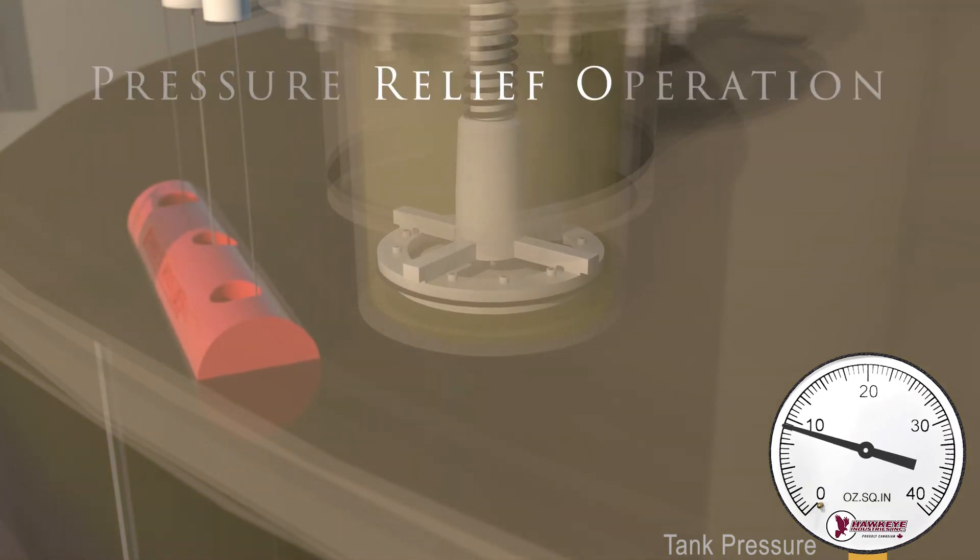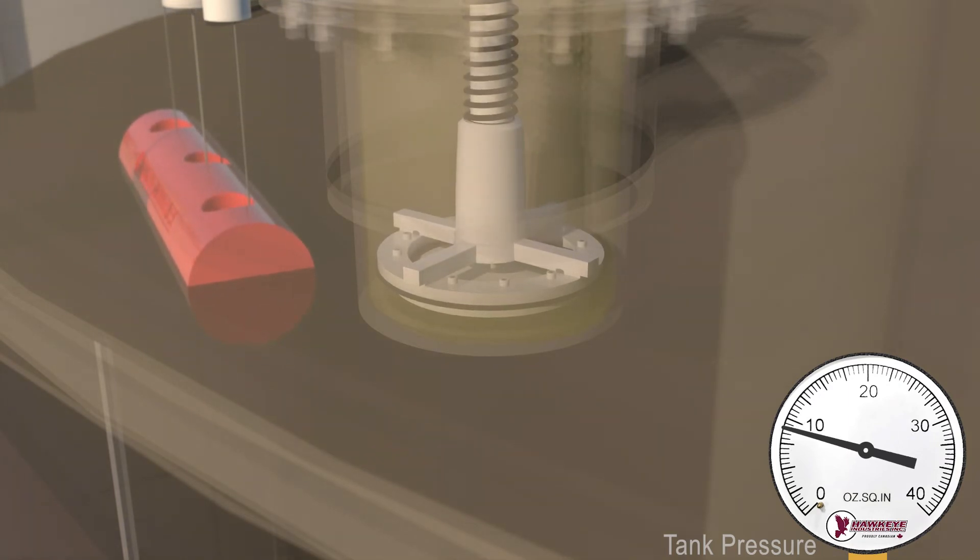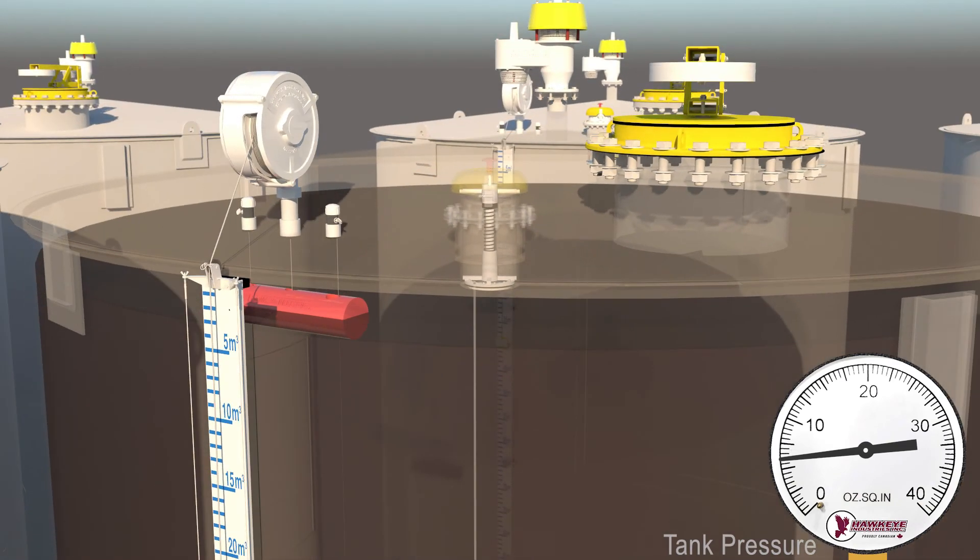As pressure increases, the spider cage continues to lift until it's able to control the flow of gas. As fluid flow stops and venting reduces pressure in the tank, the spider cage reseats as tank pressure drops below the 6 ounces per square inch relief setting.